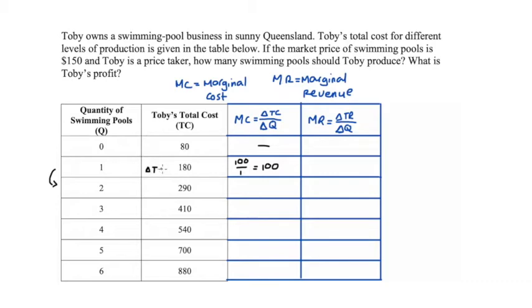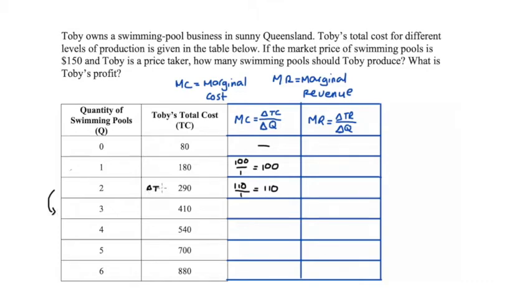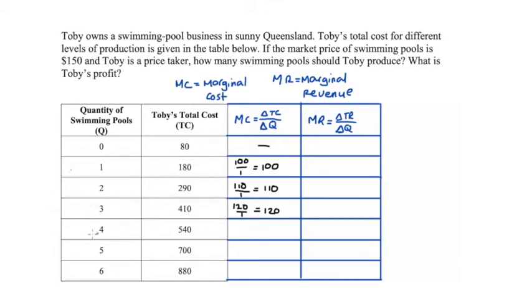For the second unit, the change in total cost is 290 minus 180, which is 110, and the change in quantity is 1, so marginal cost is 110. For the third swimming pool, the change in total cost is 410 minus 290, which is 120, and the change in quantity is 1, so marginal cost is 120. For the fourth swimming pool, the change in total cost is 540 minus 410, which is 130, and marginal cost is 130.